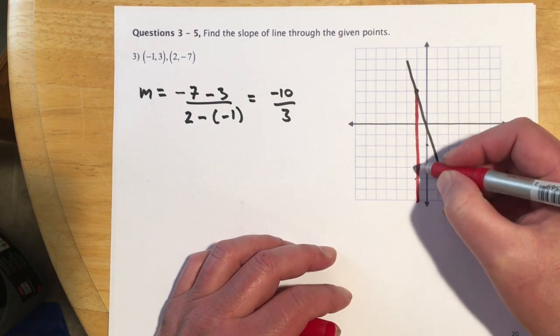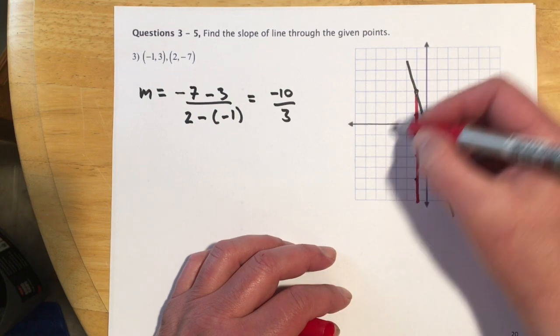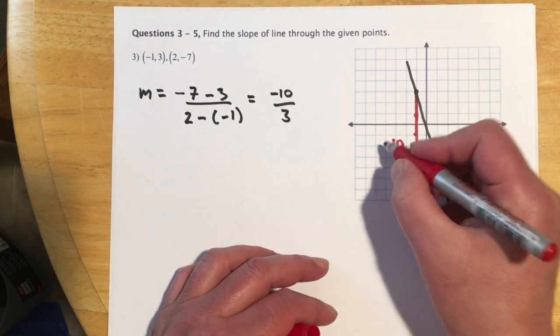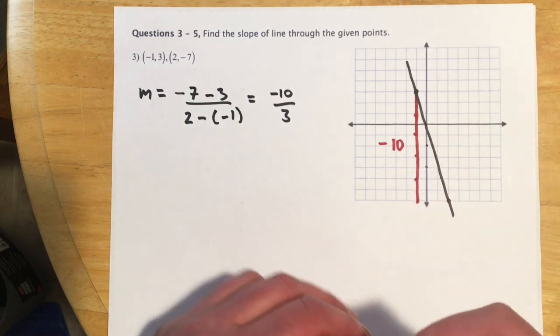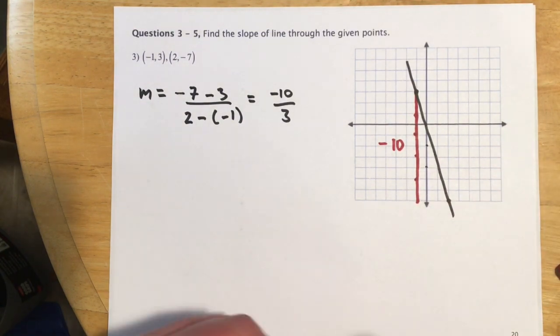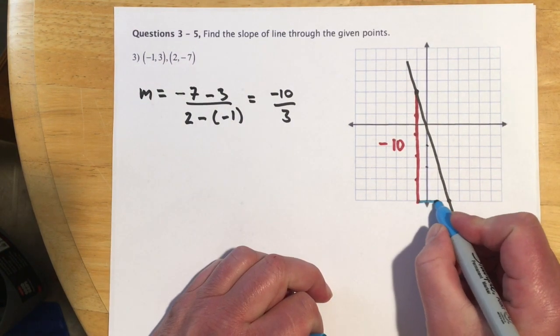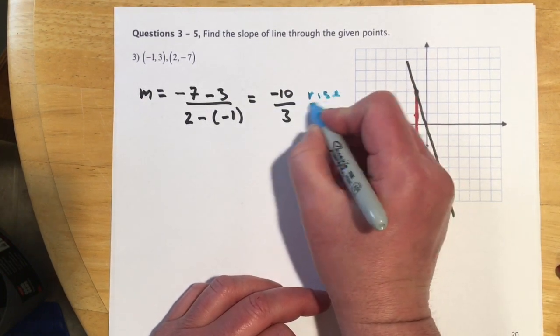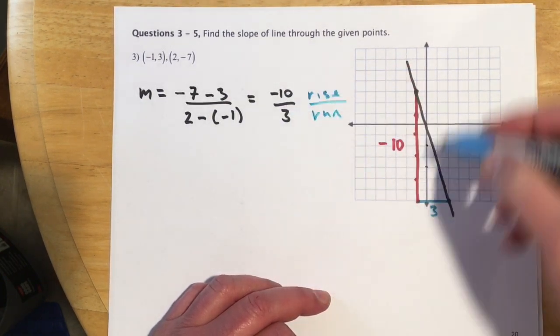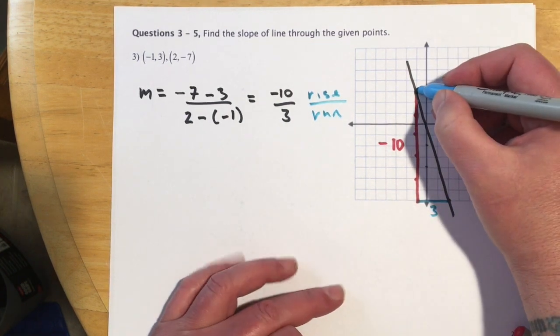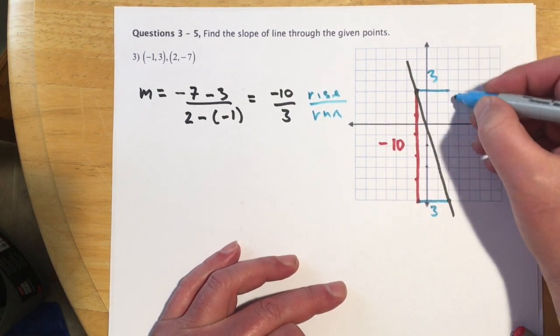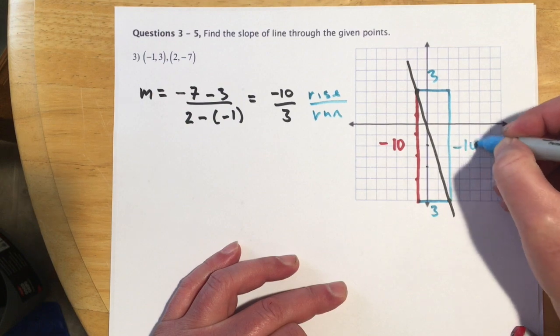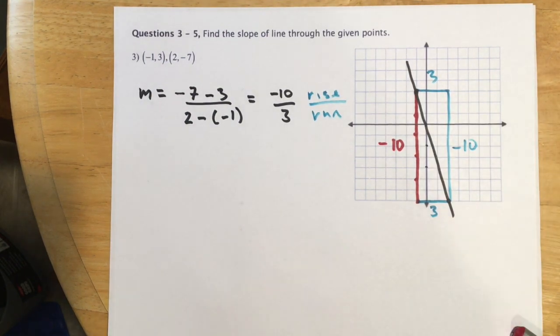If we count the boxes, we've got 2, 4, 6, 8, 10. So that's 10. And it's negative because we're going down. And then looking here, this is 3. And so there's our rise over our run of negative 10 thirds. We could also go 3 this way, and then negative 10, and get the exact same thing. So it doesn't matter which one you do first.